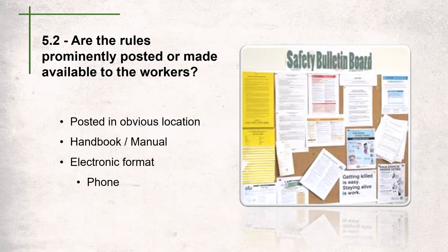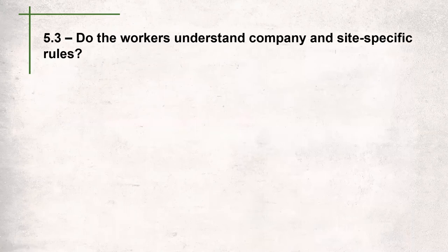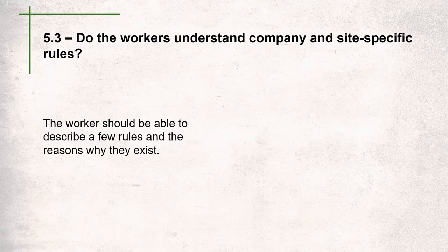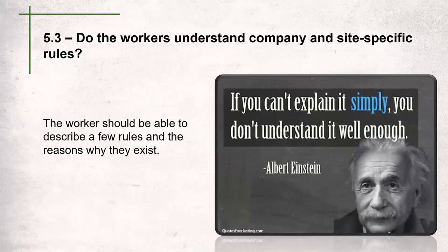Question 5.3 asks: do the workers understand company and site-specific rules? This is an interview-only question. The only way to be successful here is to make sure that your workers and management understand the company rules fully. The workers and management interviewed will be asked to describe a few of the rules and the reasons why they exist. If they can't explain it simply enough, then they don't understand it well enough — this point is all about making sure employees understand what the rules are.